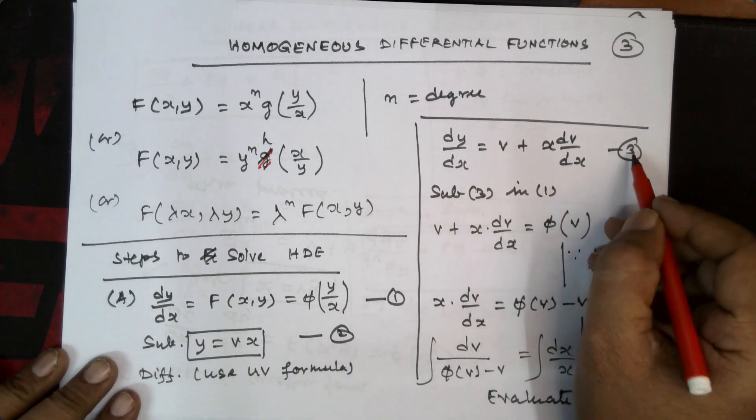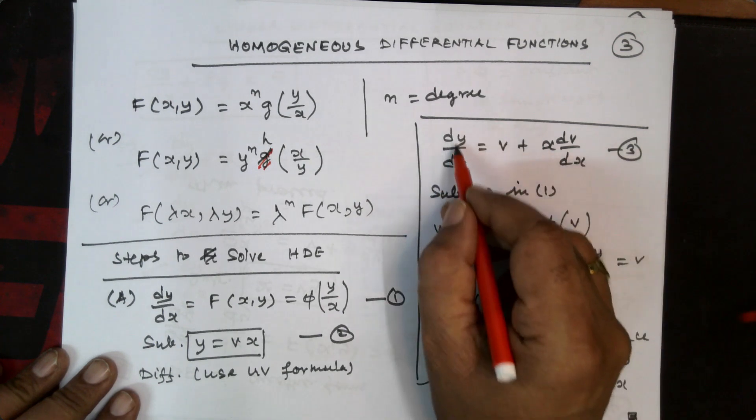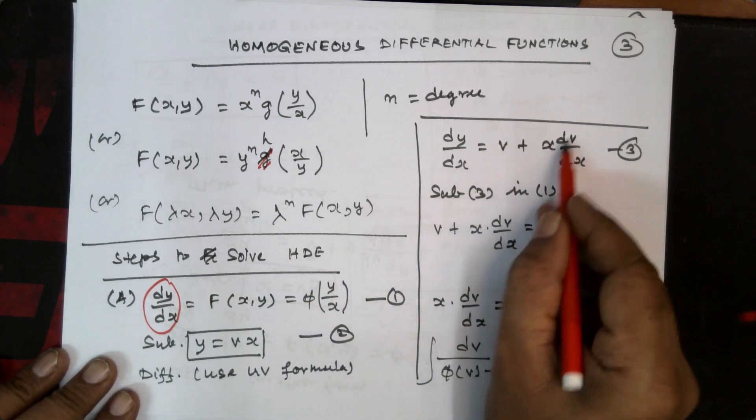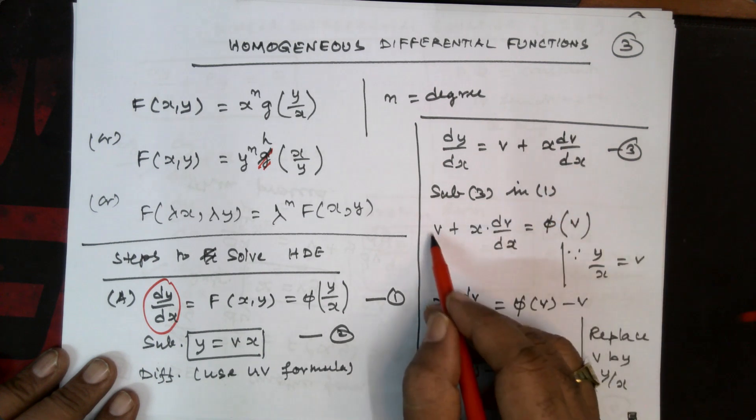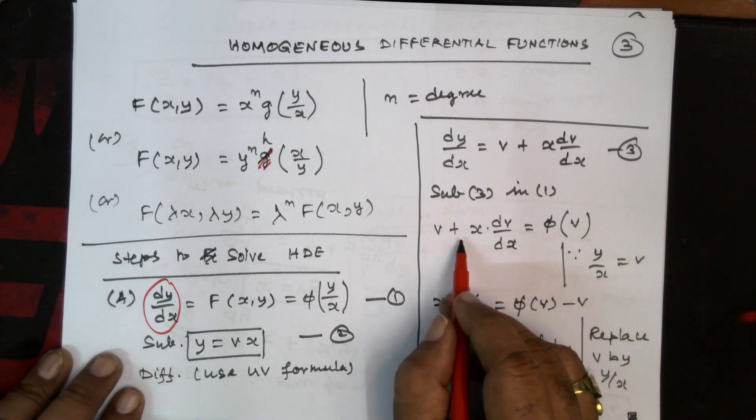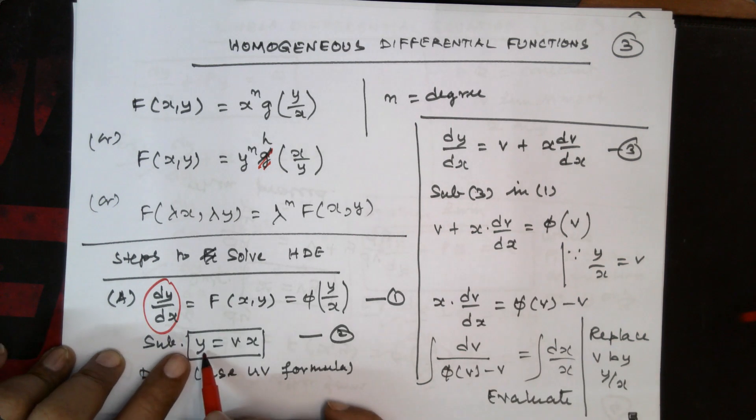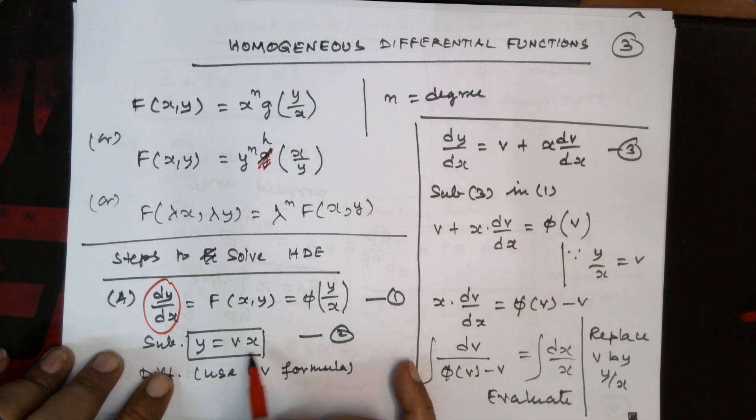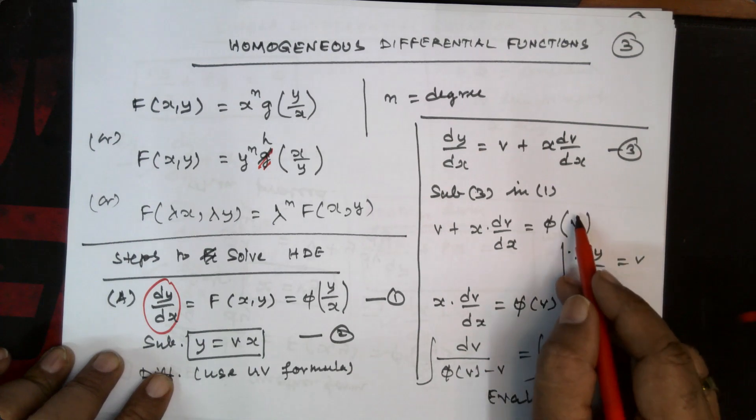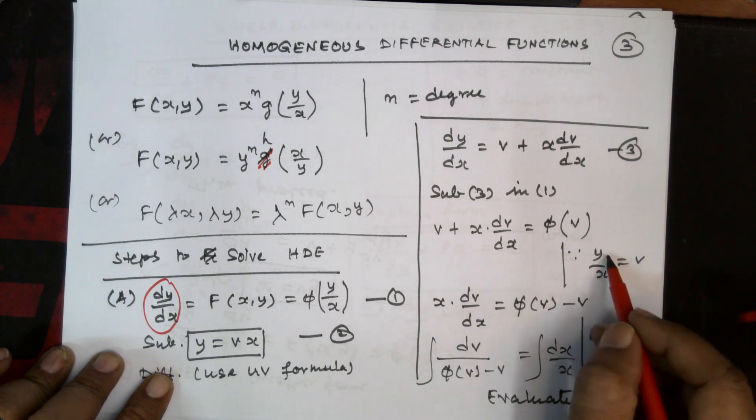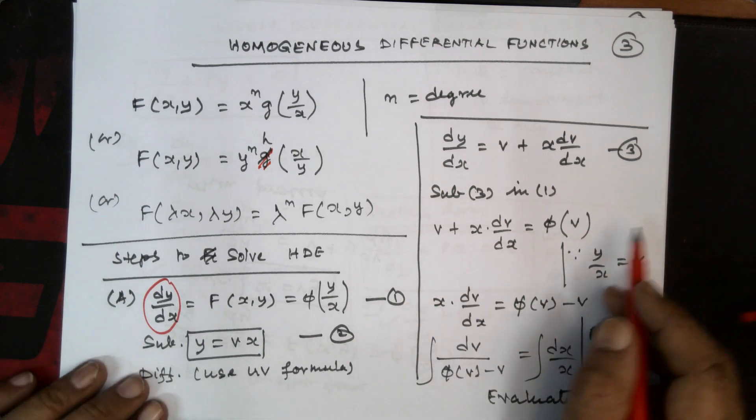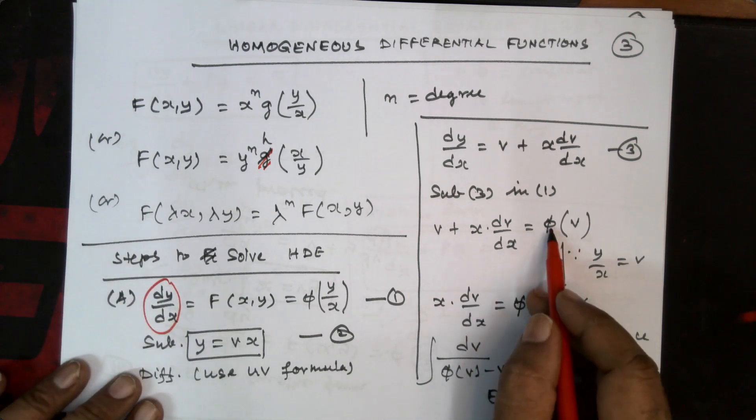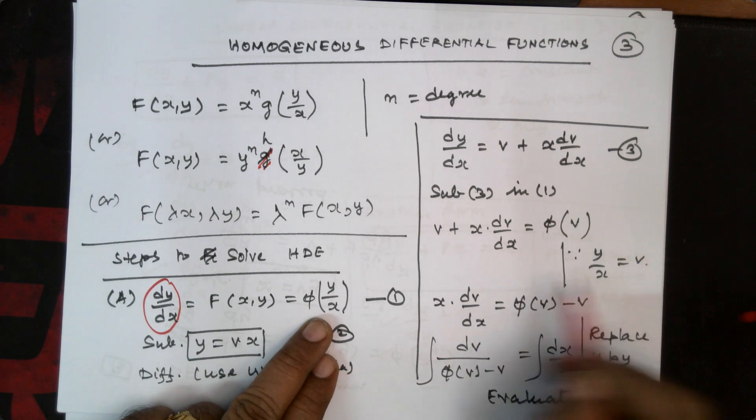Now we have got equation 2 and 3. Now you can substitute this dy by dx here. And thereby, you can get v plus x into dv by dx, the complete form. So here you have got already dy by dx, so v plus x into dv by dx, that is equal to phi of y by x. Instead of y by x, I put y by x is nothing but v, so you can put simply v. Now we have v plus x into dv by dx, and phi of v. Instead of y by x, I have put v here.